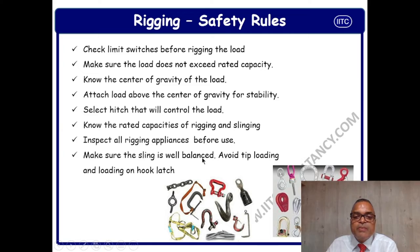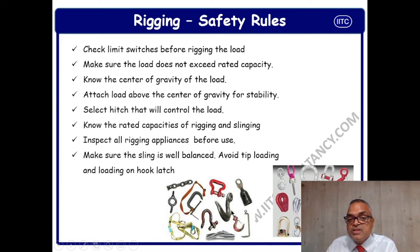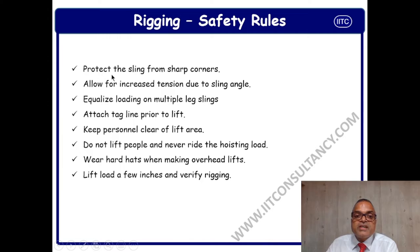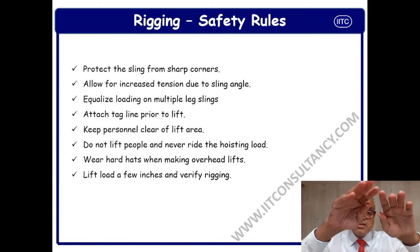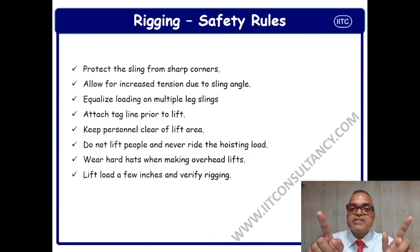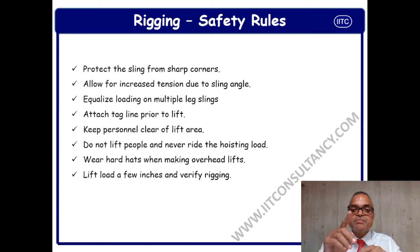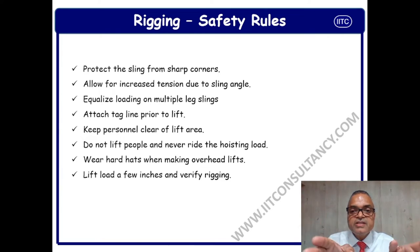Make sure the sling is well balanced. Avoid tip loading and loading on the hook latch — loading must be done in a balanced way. Put the load in the correct position on the hook, not at the tip. Protect the sling from sharp corners. Normally if there is a square load, the edge is right-angled and very sharp — if you are using wire rope, it will be damaged at the sharp edge, and your fabric rope will also be damaged. You have to protect the sharp edge so that the sharpness is removed.